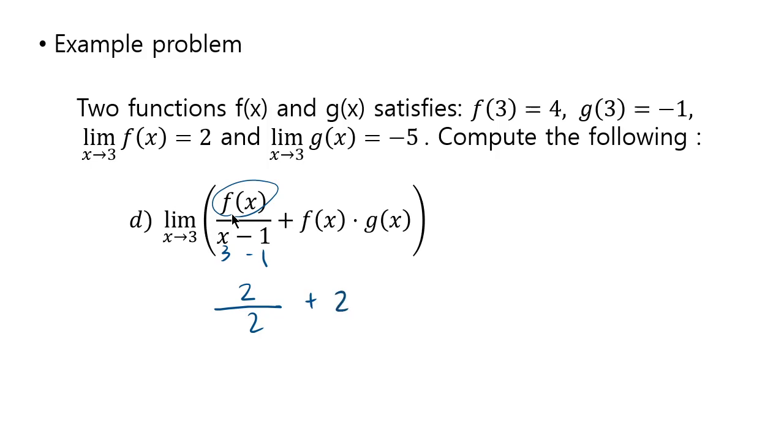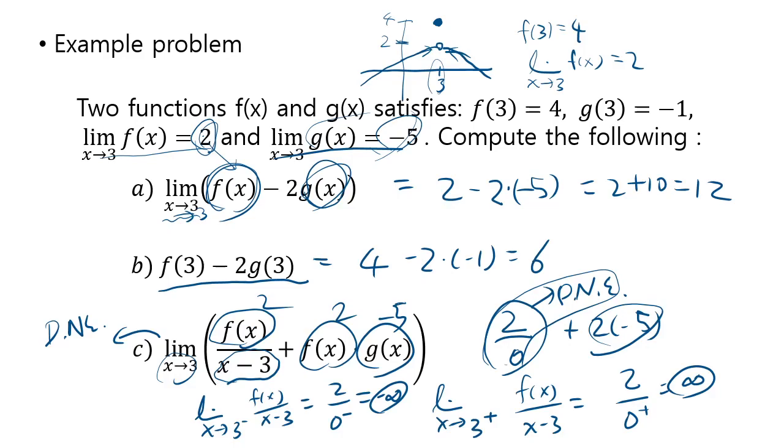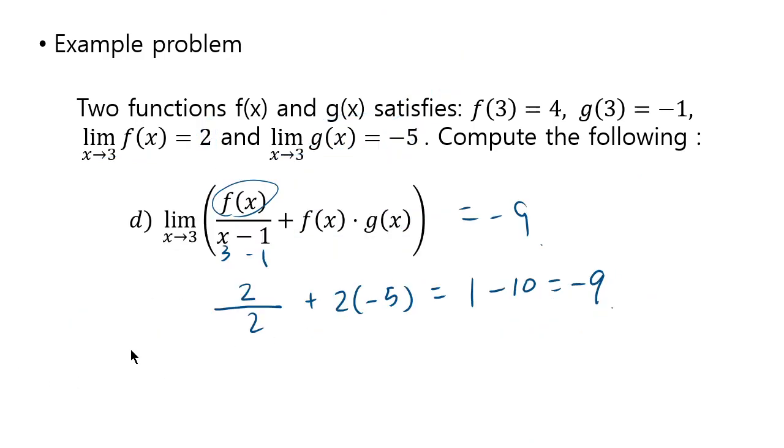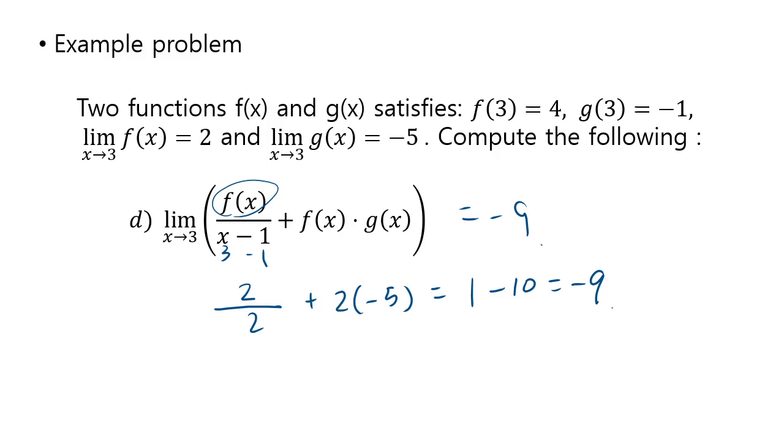The other one is 2 times negative 5. In this case, it will be 1 plus negative 10, which is negative 9. So you have these four different examples. And I hope that seeing these questions can help you to understand what we are trying to say here and not pay attention to these strange properties that you don't have to know.